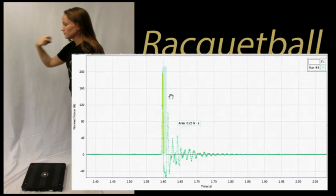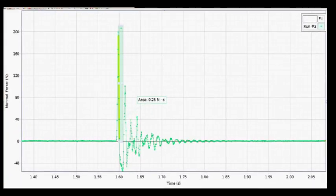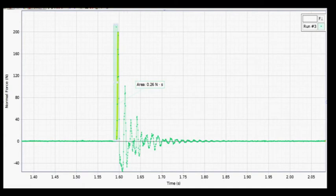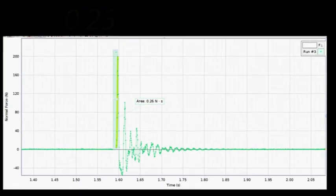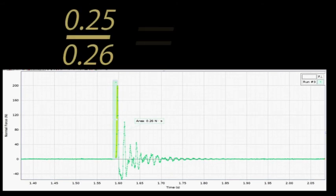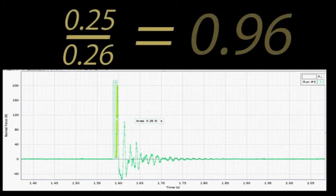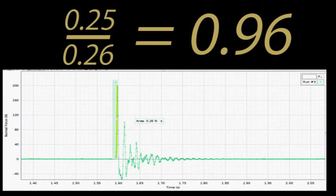The area on the right side of the curve equals 0.25, and the area on the left side of the curve equals 0.26. Based on the calculations we derived earlier, we know the area of the right side over the area of the left side should equal the coefficient of restitution. Therefore, the coefficient of restitution for a racquetball is 0.25 divided by 0.26, which is equal to 0.96. This makes sense because it implies an almost completely elastic collision.